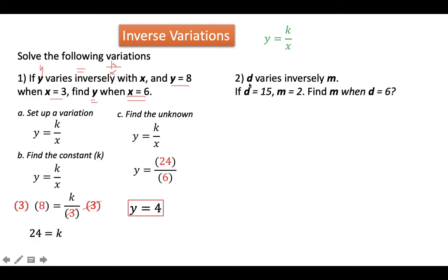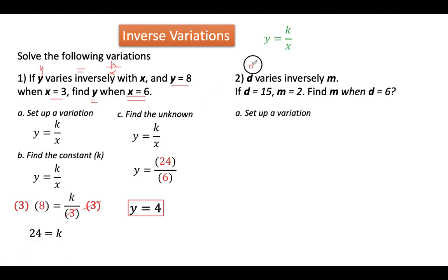For number 2: d varies inversely as m. If d is 15 when m is 2, find m when d is equal to 6. Same process — set up a variation. Since it is an inverse variation, we expect a fraction. We take the reciprocal of m, so it becomes k over m. Our variation is d is equal to k over m.